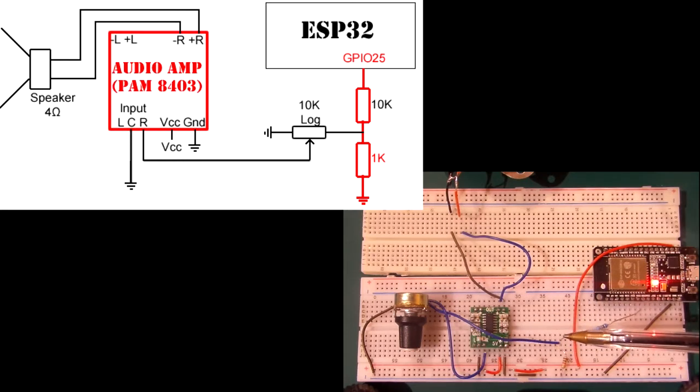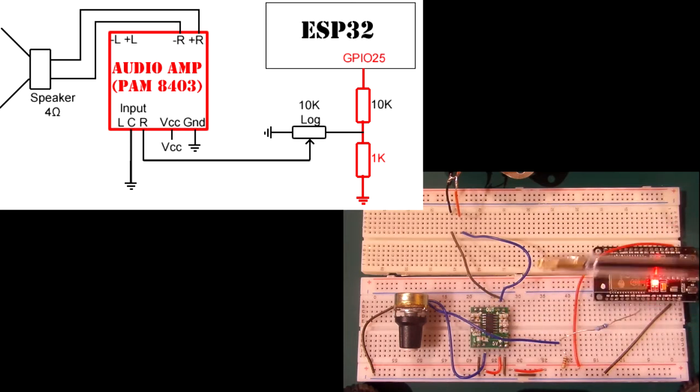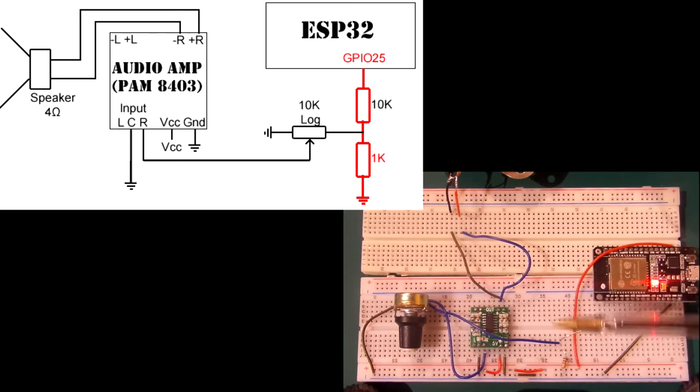Now the audio amp, by the way, is based on the PAM8403 audio amp chip. And it's very widely available on these little modules like this for about half the price of a chocolate bar delivered from abroad, China, wherever you might get them from. And they will drive speakers as low as 4 ohms if you don't take the voltage much above 5 volts.